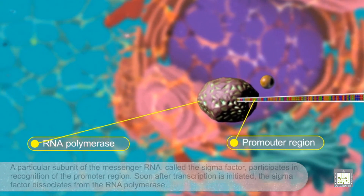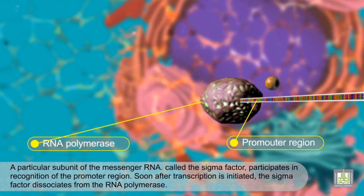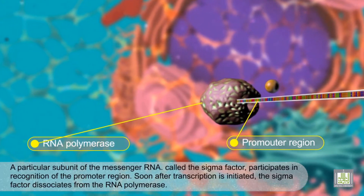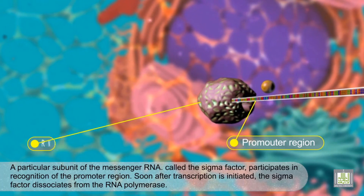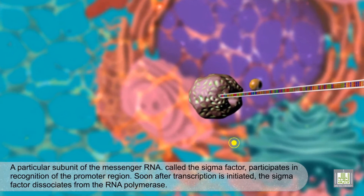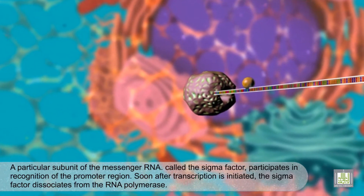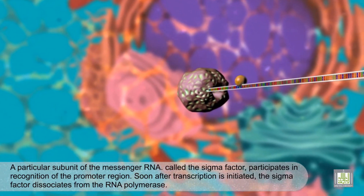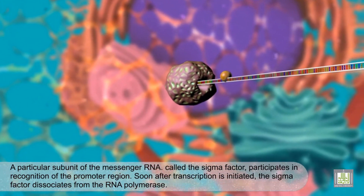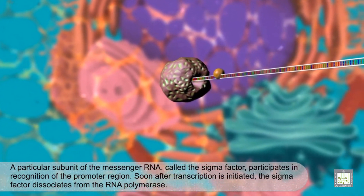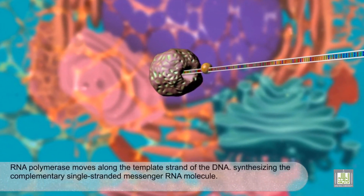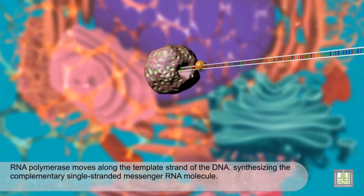A particular subunit of the RNA polymerase, called the sigma factor, participates in recognition of the promoter region. Soon after transcription is initiated, the sigma factor dissociates from the RNA polymerase.